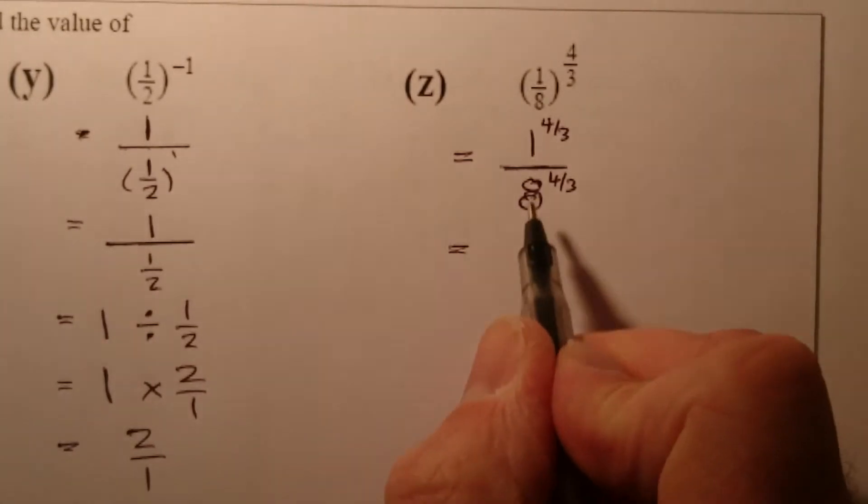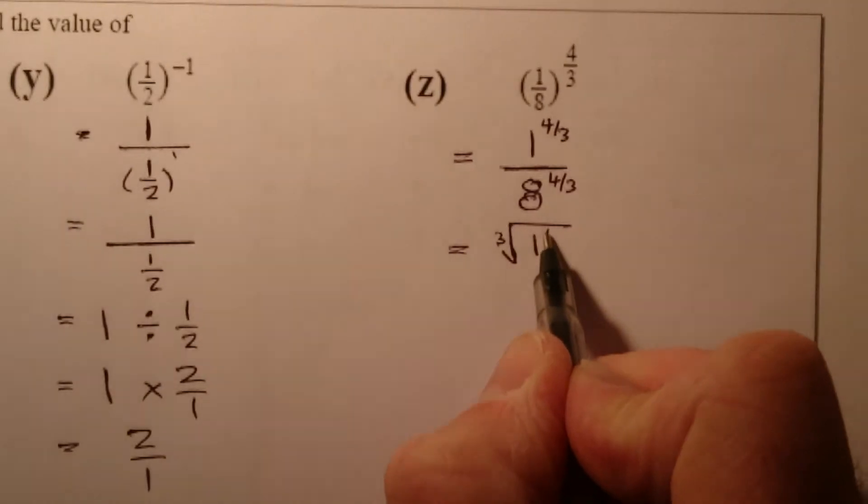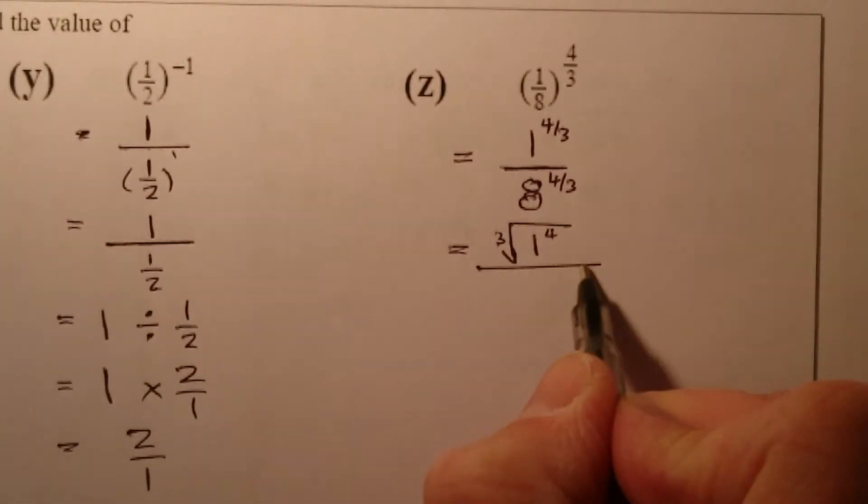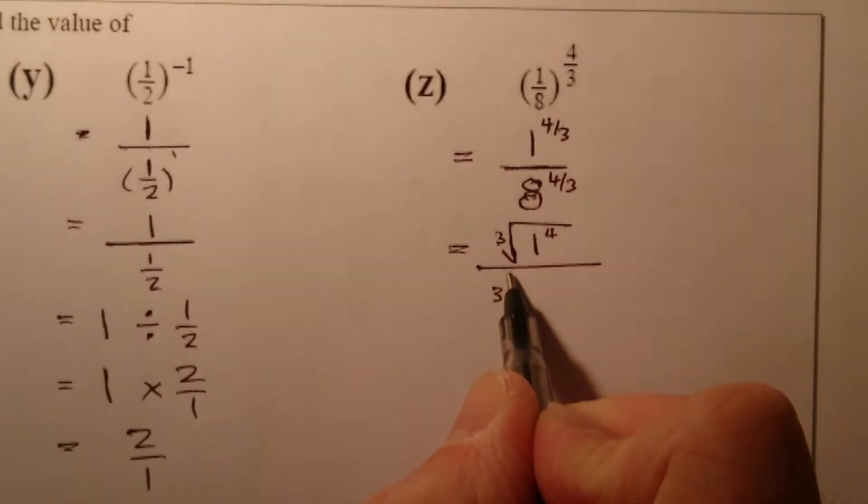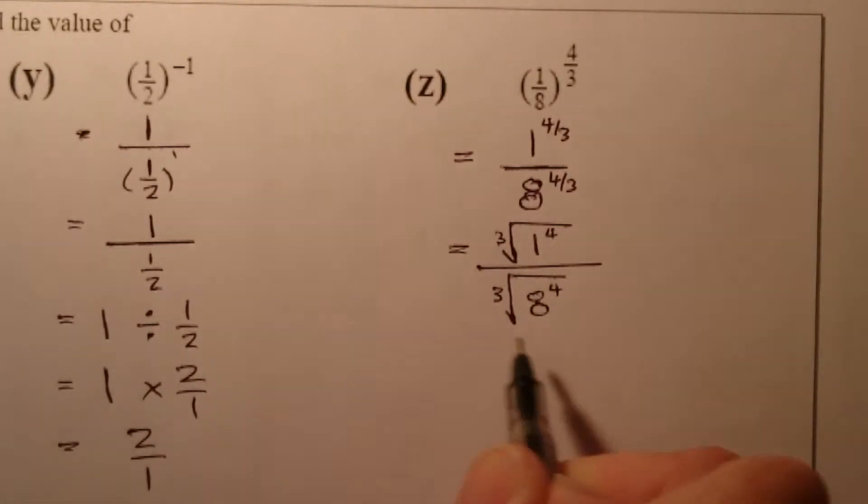So what I have here is I've got the cube root of one to the power of four on the top. On the bottom, I've got the cube root of eight to the power of four.